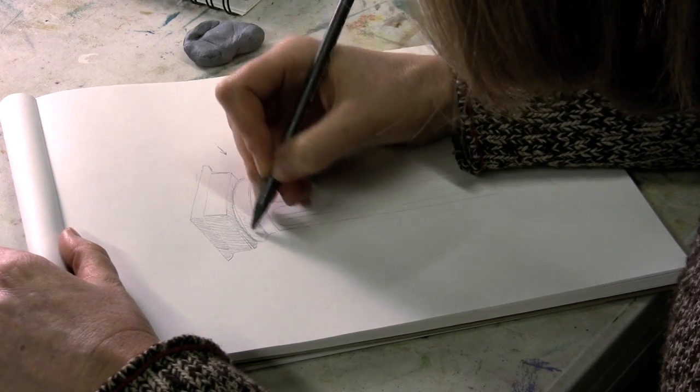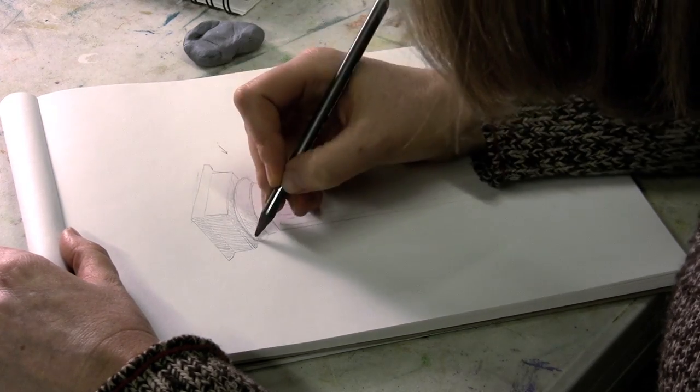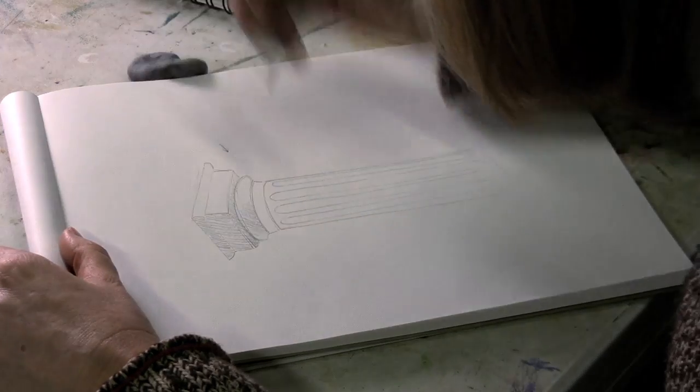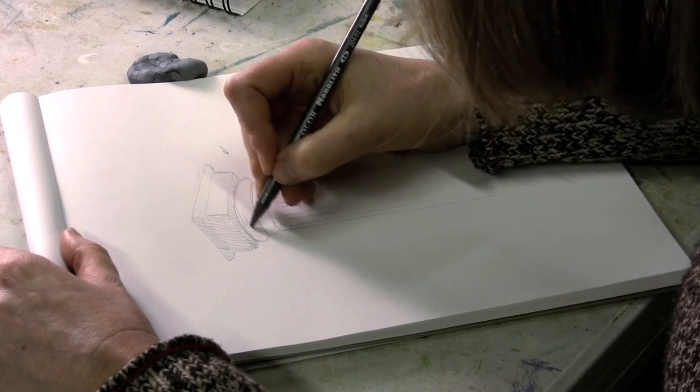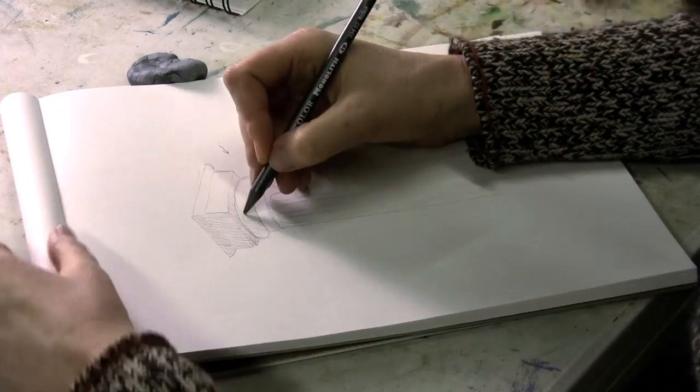The round part of the capitol is going to be shaded. It'll have a little reflected light over on this side because a little bit of light can come around that corner.